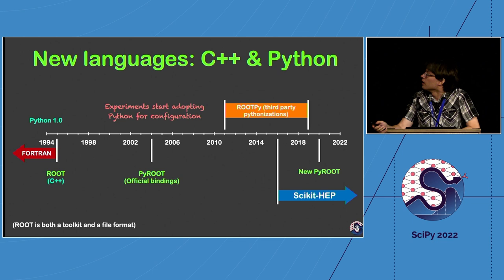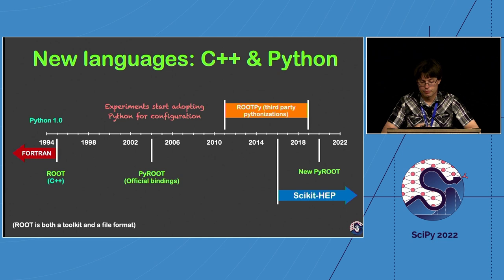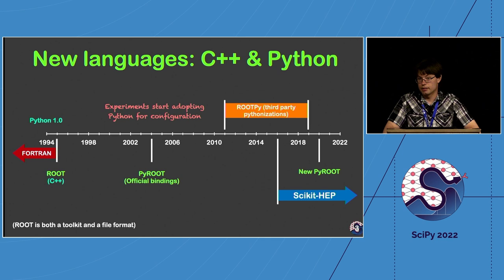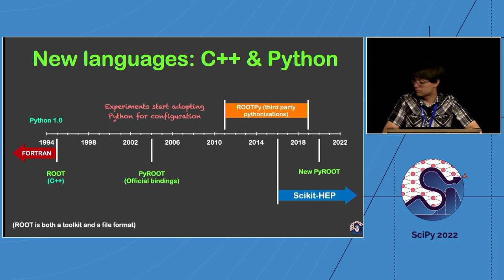Starting back around 1994, FORTRAN was used quite heavily in high energy physics, and there was a need to move to a new language. This was right at the time of Python 1.0, and a few physicists were playing around with Python and talking with Guido. But C++ ended up getting chosen, and a package called ROOT was created — a toolkit providing a massive amount of different needs for high energy physicists, as well as a file format.